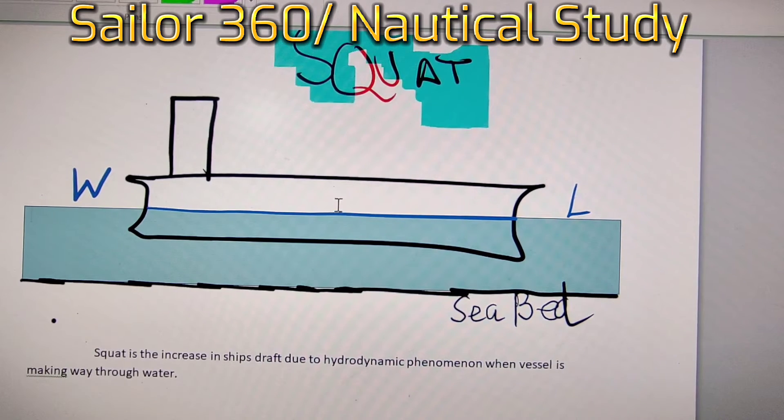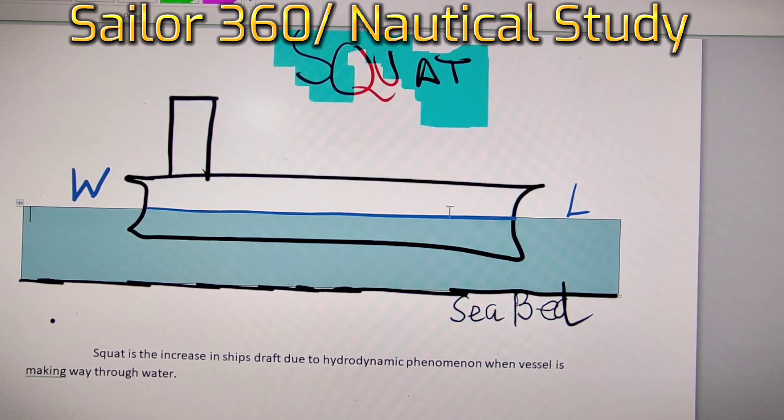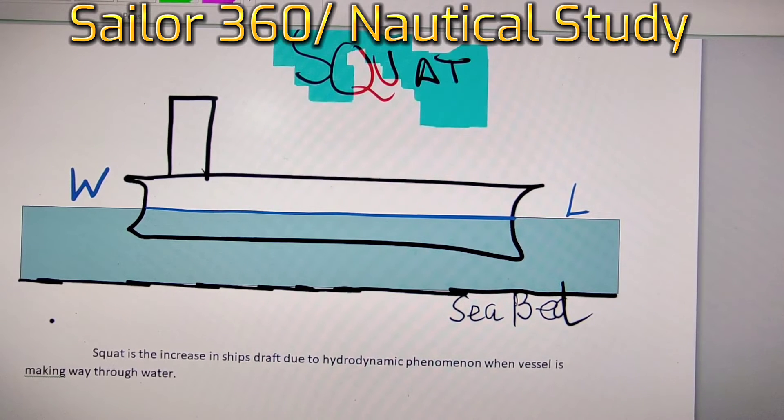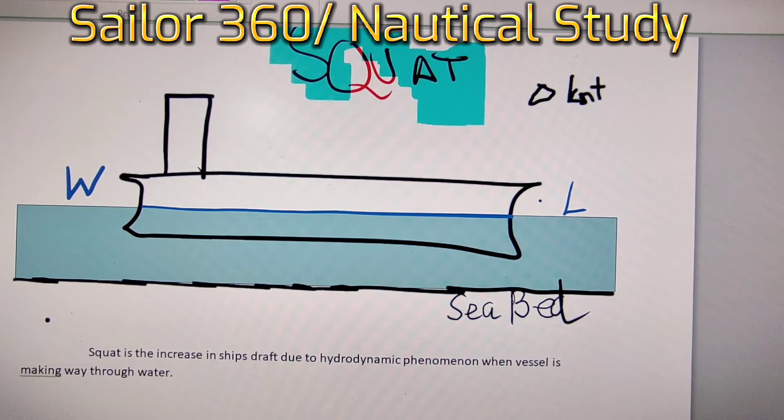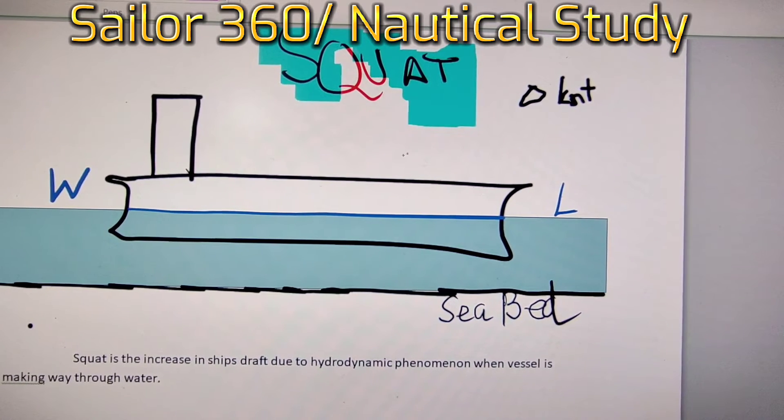Now let's consider this vessel is having zero knot speed - that means the vessel is stopped. That is why the water line is here. Now let's consider the vessel's speed has increased up to 10 knots.